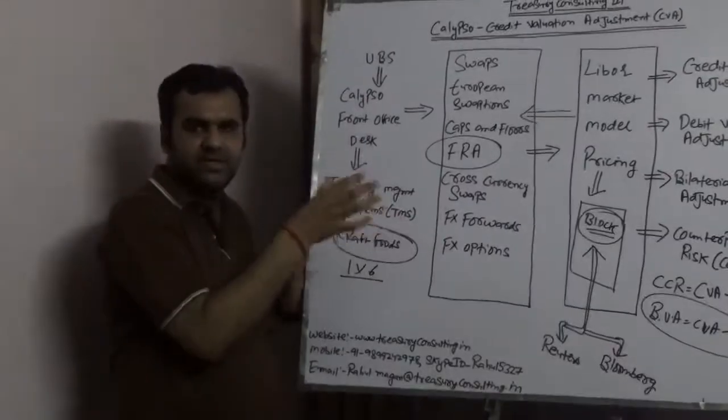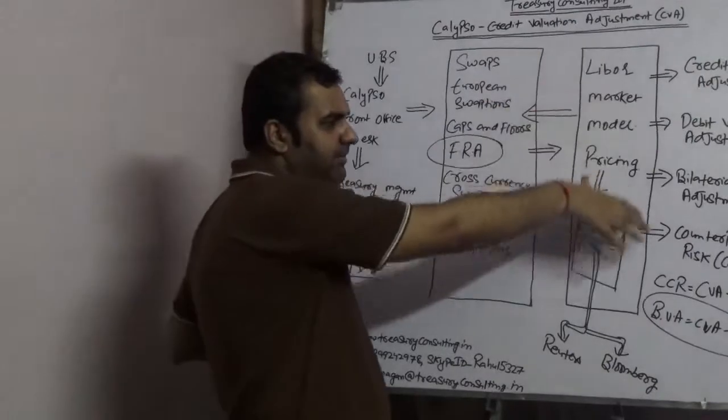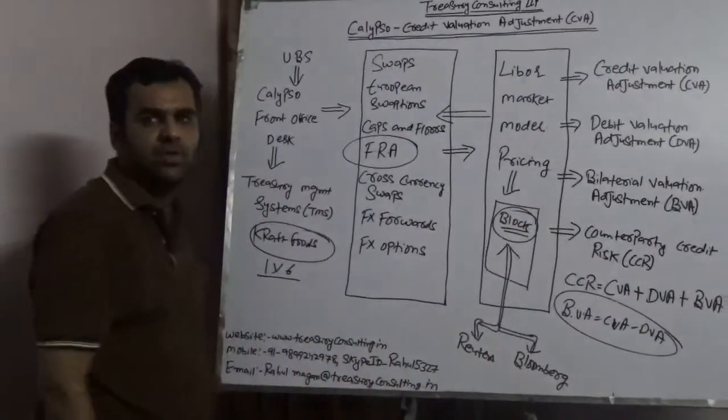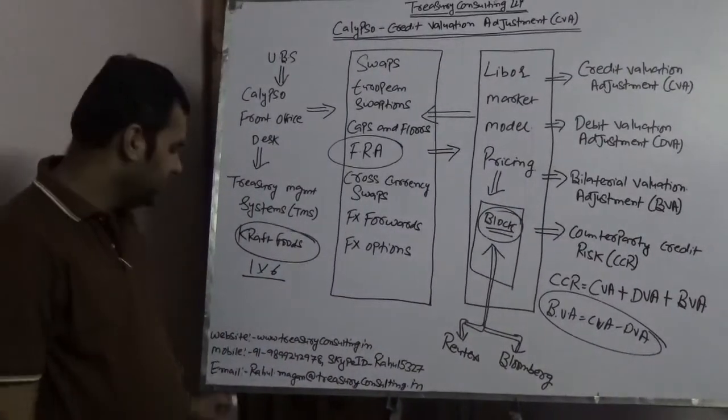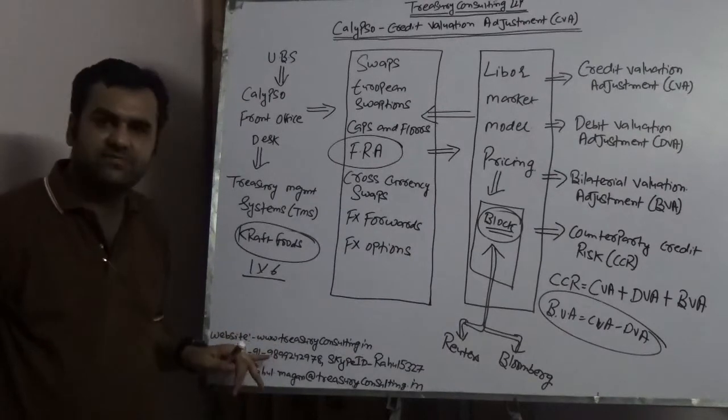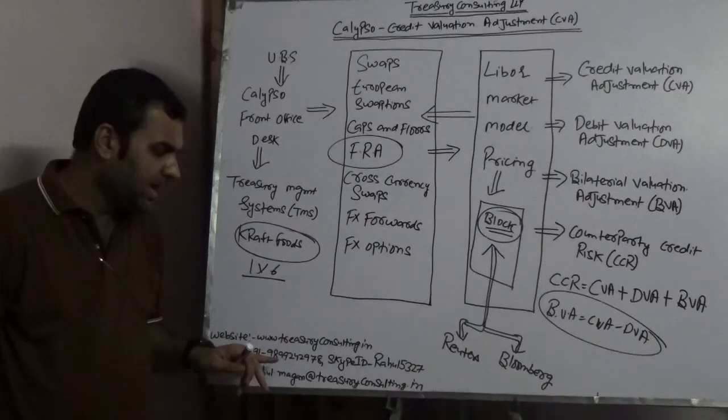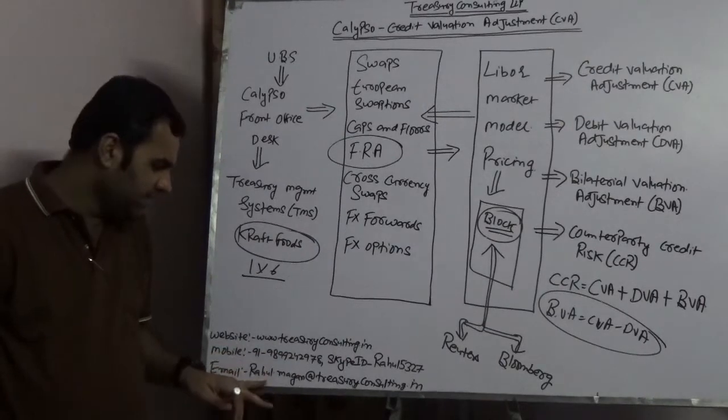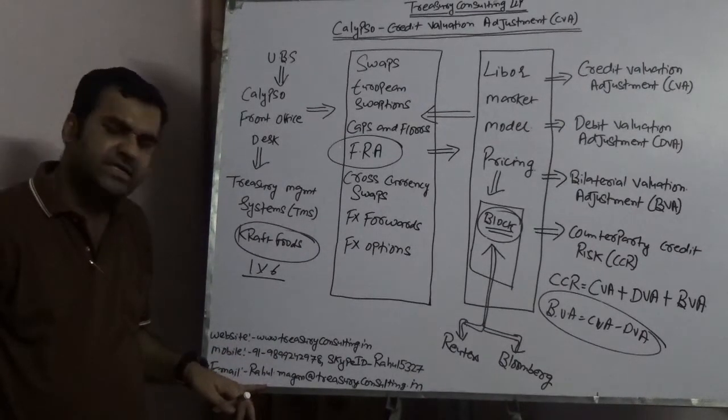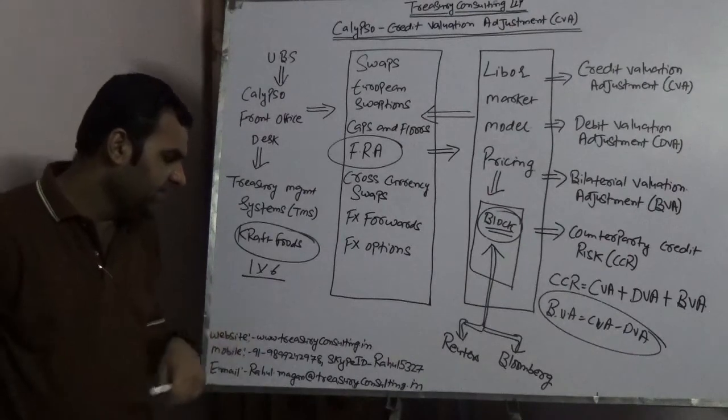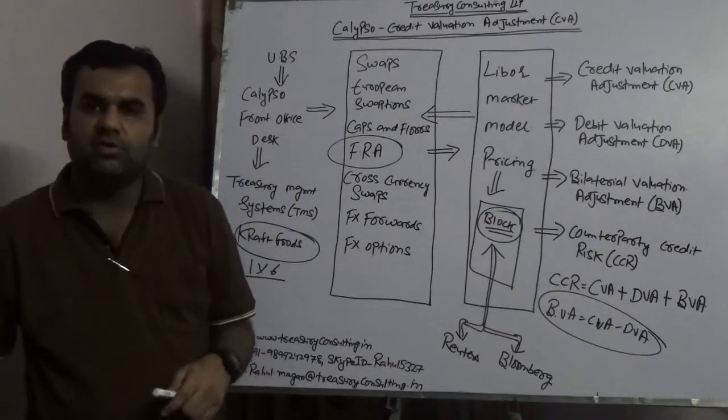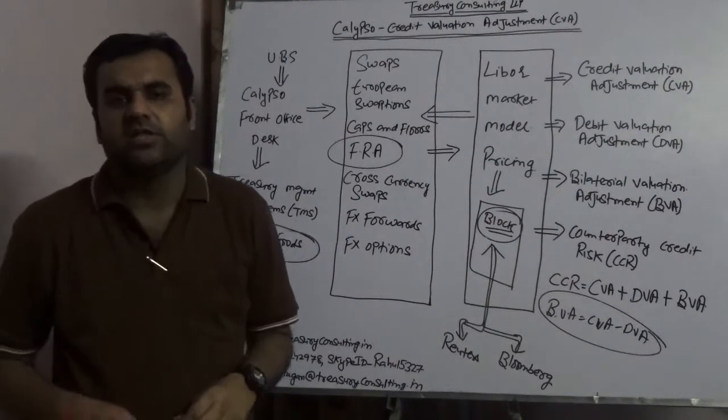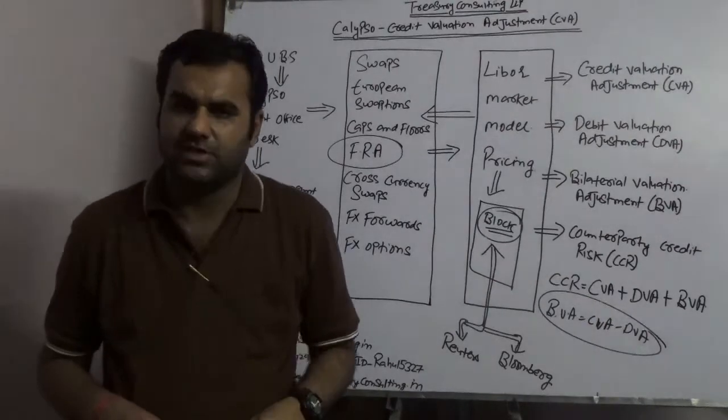You are always welcome to connect with us at 9899242978, which is my mobile number. My Skype ID is rahul5327. My email is rahul.magan@treasuryconsulting.in, and my website is www.treasuryconsulting.in. Thank you very much and have a wonderful time.